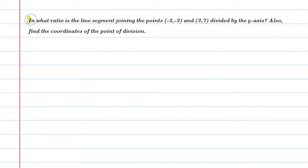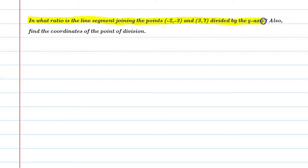Hello students, let's solve this question: in what ratio is the line segment joining the points minus two comma minus three and three comma seven divided by the y-axis? Also find the coordinates of the point of division.